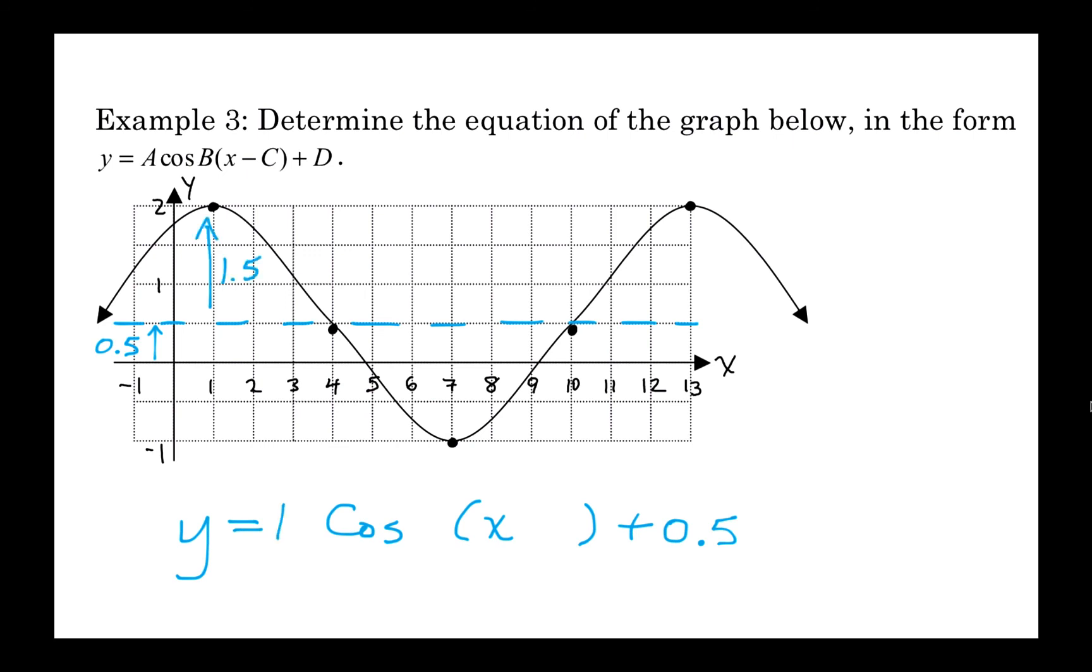I can see that the amplitude is 1.5. So I put that out in front. I can see that the period is 12. So I can write the b value as 2 pi over 12, which you can leave like that if you want it standardized. Or you can simplify it to pi over 6 if you really want. And finally, minus 1. So I know that a positive cosine would normally start at its maximum, and that's 1 to the right. And so that's why I'm replacing the x with an x minus 1.